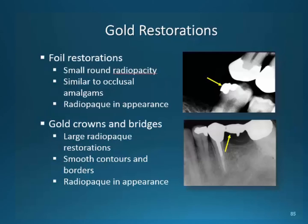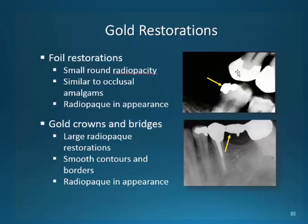Gold restorations come in two kinds. They are either foil restorations — little round radiopacities typically on occlusal surfaces — or crowns. This radiopaque image is very smooth and resembles an amalgam. Crowns made of gold have a much different appearance than porcelain crowns — they are large radiopaque restorations with very smooth contours. We can see there is no residual material used around this bridge, and most likely this is an entirely gold crown and gold bridge. This entire tooth is covered in restorative material, most likely a complete gold crown.